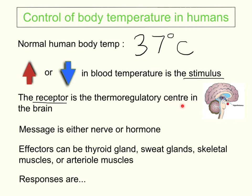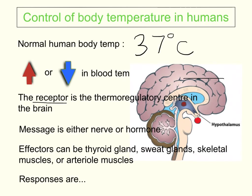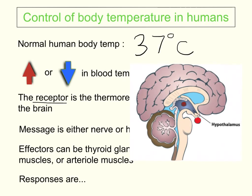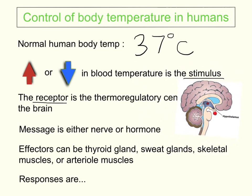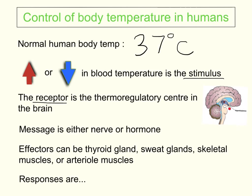The receptor that detects this stimulus is in the brain, called the thermoregulatory centre. Breaking it down: 'thermo' refers to temperature, so the thermoregulatory centre is basically the temperature control centre in the brain. It's located in a section of the brain called the hypothalamus — that's our receptor for a change in blood temperature. The message sent can be either a nerve message or a hormone message, and temperature control in the body is controlled by both nerve and hormone messages.